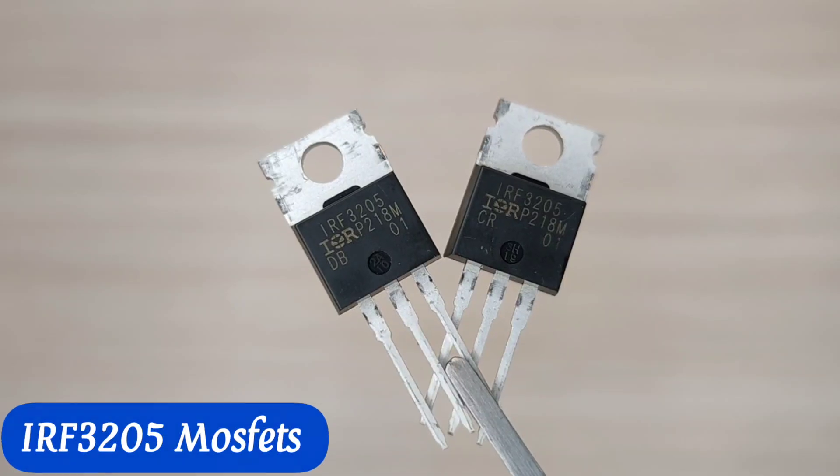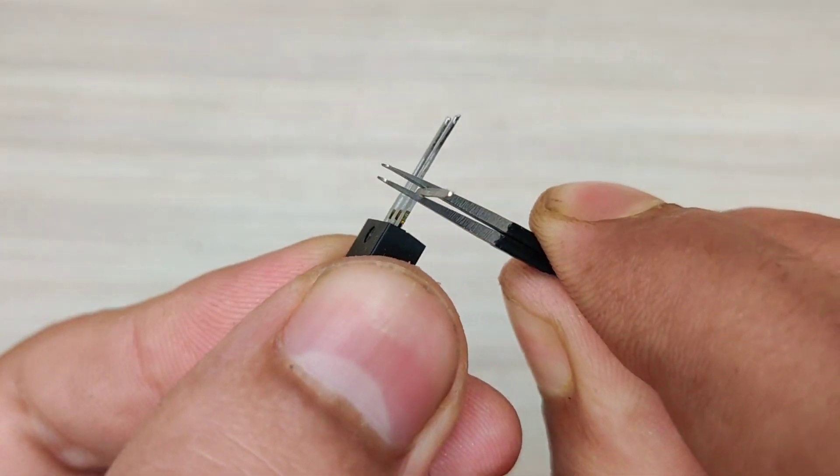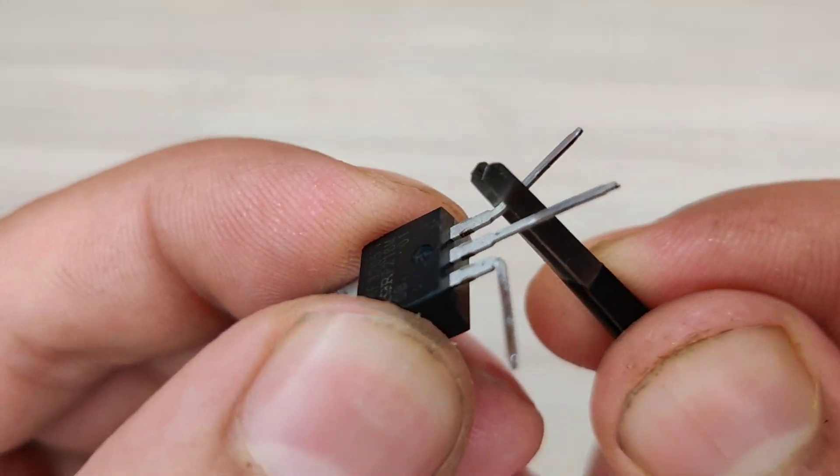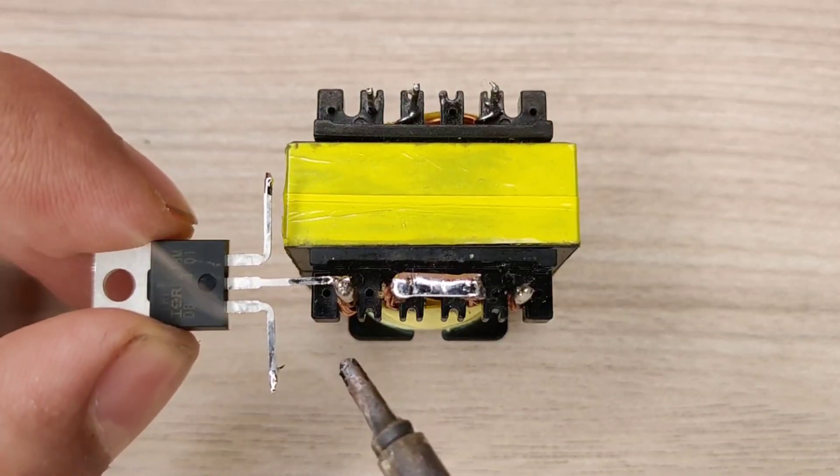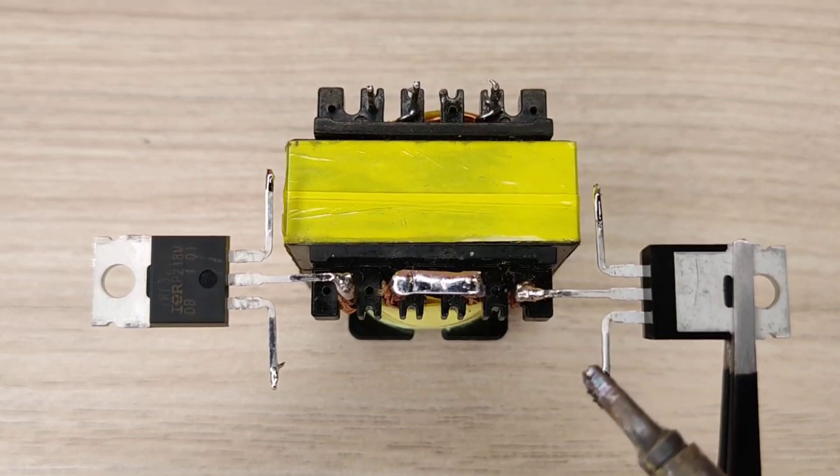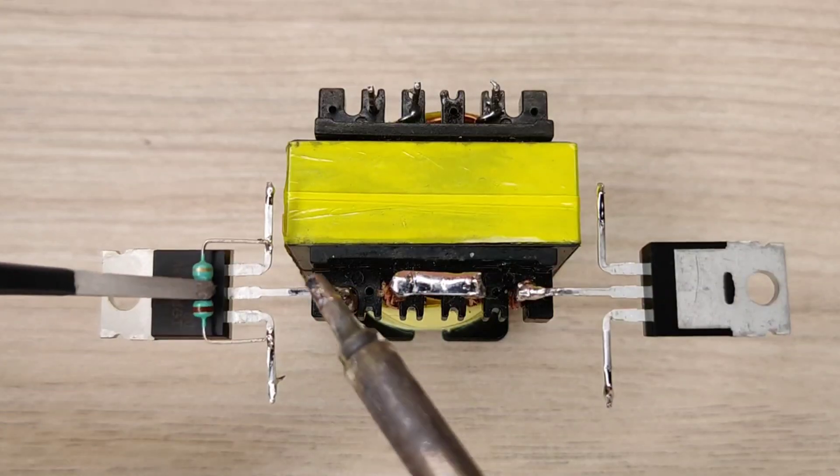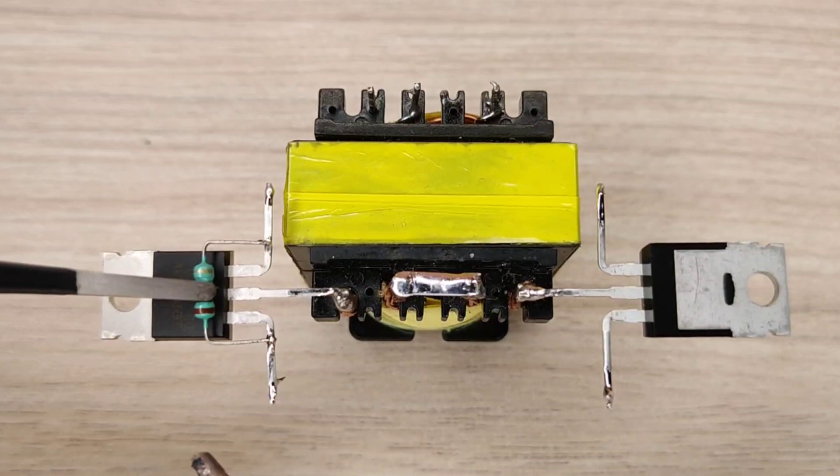I used IRF3205 MOSFET to use with this transformer. Solder MOSFET drain pins with the transformer. Solder 10 kilo ohms resistor between gate and source pins of both MOSFETs.